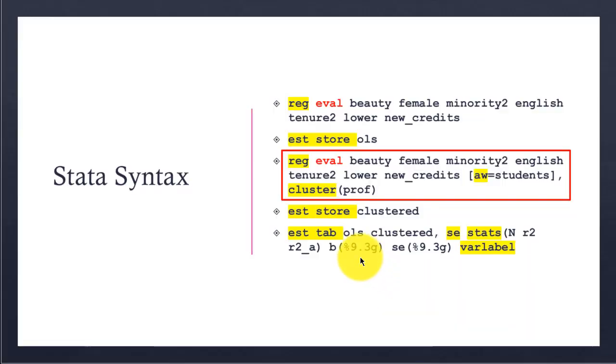First, I've used the regress command—the short form is reg—and then eval is my dependent variable, beauty is the variable of interest, and the rest are controls. If I run this one line, it will get the results for a regular ordinary least squares regression model. I can use the command est store ols so that the output from this command is stored.